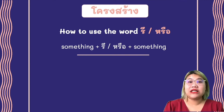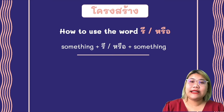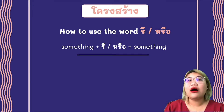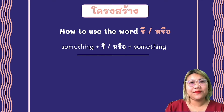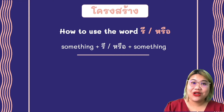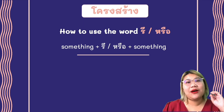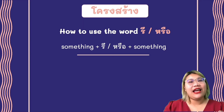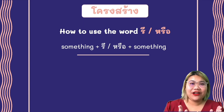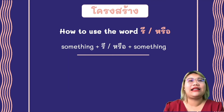The first pattern is how to use the word หรือ or ร. We can put the word หรือ in the middle of the sentence — something, then หรือ, and then another thing.